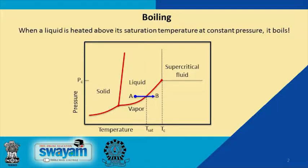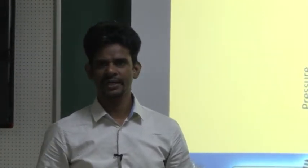Boiling is a process where a liquid is transformed into a vapor. This happens when you take a liquid and increase the temperature beyond its saturation temperature at the given pressure. This process can be shown in the phase diagram, which indicates whether a particular component will exist as a liquid, solid, or vapor at given temperature and pressure conditions.